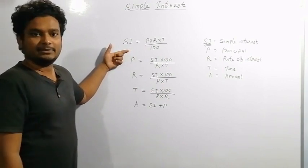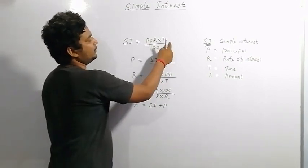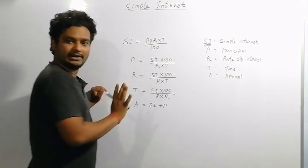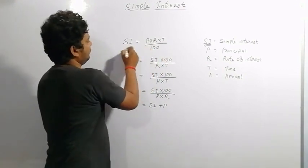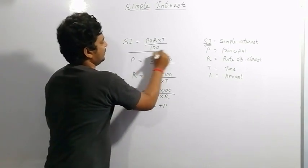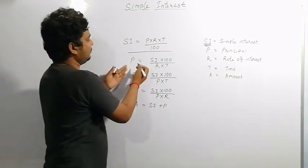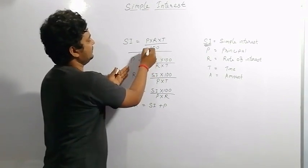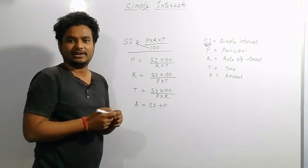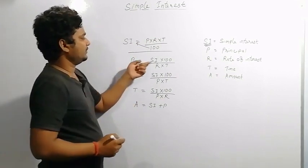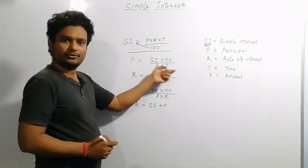Coming to the formula for simple interest: SI equals principal into rate into time divided by 100. From this one formula, we can transform it into other forms. When we have to find P, then principal equals simple interest into 100 divided by rate of interest into time.